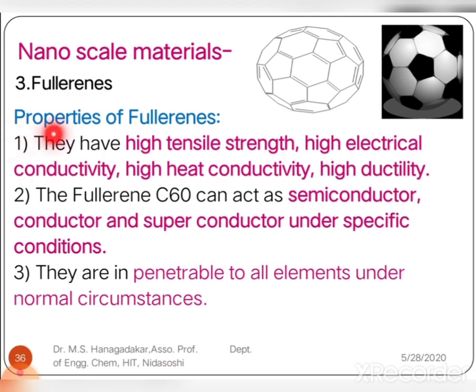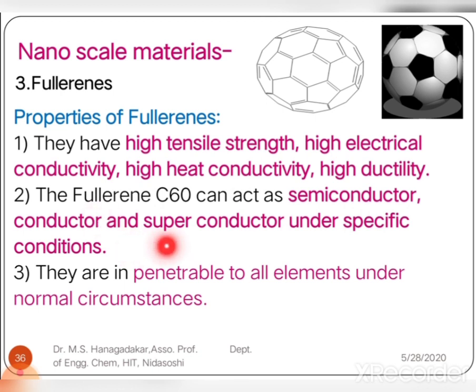The properties of fullerenes include high tensile strength, high electrical conductivity, high heat conductivity, and high ductility. The fullerene C60 can be used as a semiconductor, conductor, or superconductor under specific conditions. Fullerenes are also impenetrable to all elements under normal circumstances.